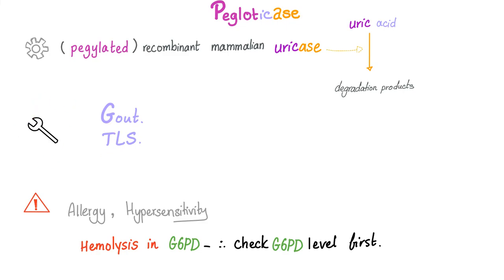Clinical uses of pegloticase include gout and tumor lysis syndrome (TLS), which causes hyperuricemia. Side effects: since it is foreign to humans, allergy and hypersensitivity reactions can occur. In patients with G6PD deficiency, hemolysis can happen. Therefore, before prescribing pegloticase, check the G6PD level first. Do not check G6PD levels during an acute hemolytic attack, as levels will be artificially elevated.